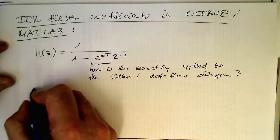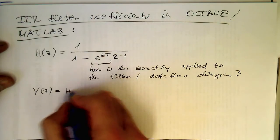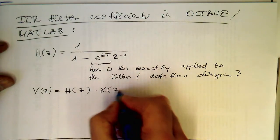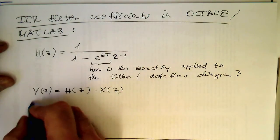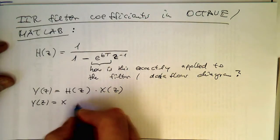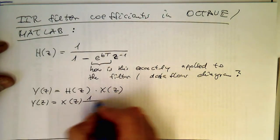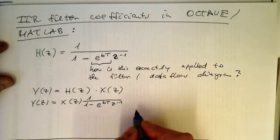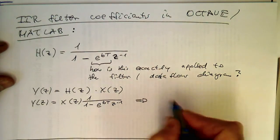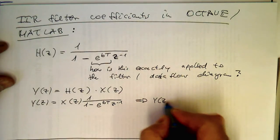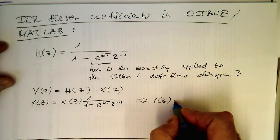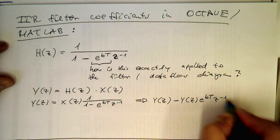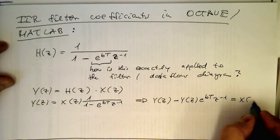And so the trick was the following. Remember, so that we have the H of Z and we multiply this with our X of Z to get our output here. And so our Y of Z then becomes here, our X of Z and then this here multiplied with 1 over 1 minus E to B T, Z to minus 1. And so that we have Y of Z. And so what we did with that was then just multiplying this here out. So that we have Y of Z and then multiply this minus Y of Z, Z and then E to B T, Z to minus 1 equals X of Z.